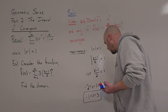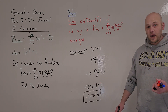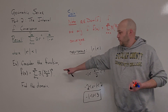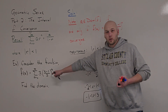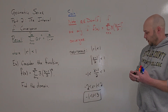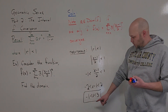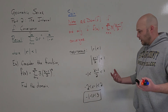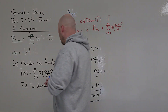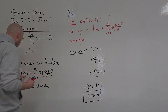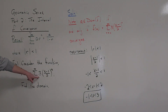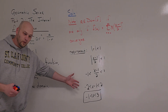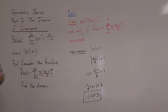Adding 1 gives me minus 1 is less than x is less than 3. Therefore, this is the domain of this function. If I plug in any x value between minus 1 and 3, this series will be convergent. Anything outside of that interval, the series will be divergent.